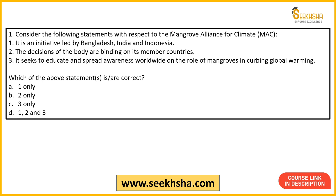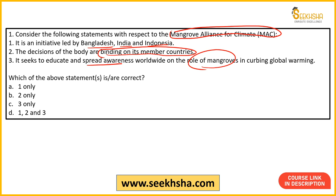The first question is related to the Mangrove Alliance for Climate. The first statement is that this initiative is led by Bangladesh, India and Indonesia. The second statement is that the decisions of the body are binding on its member countries. The third statement is that it seeks to educate and spread awareness worldwide on the role of mangroves.